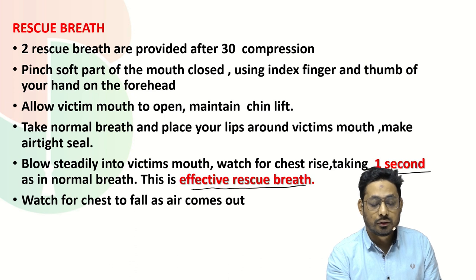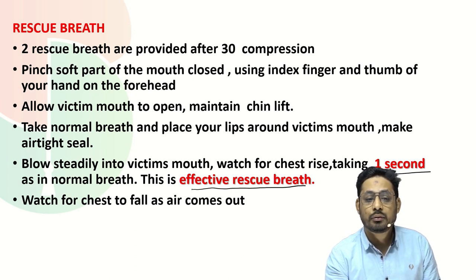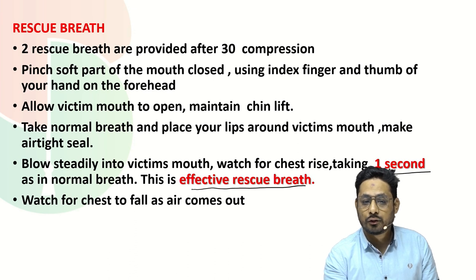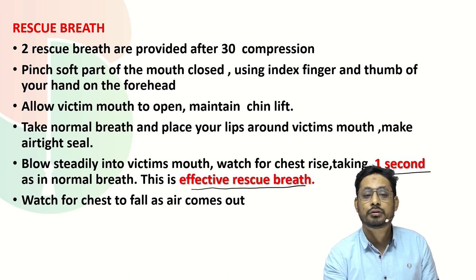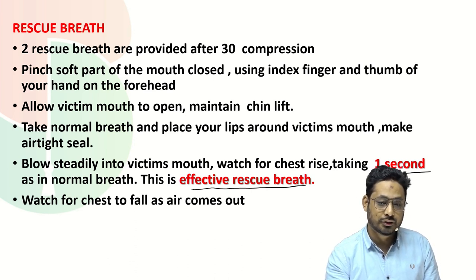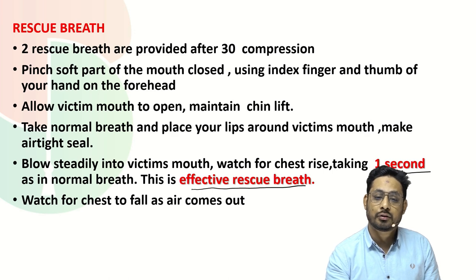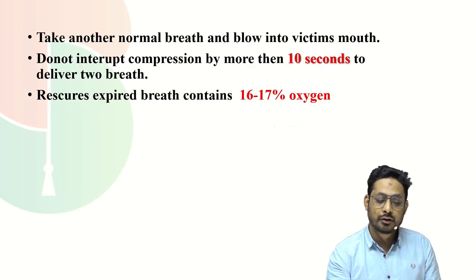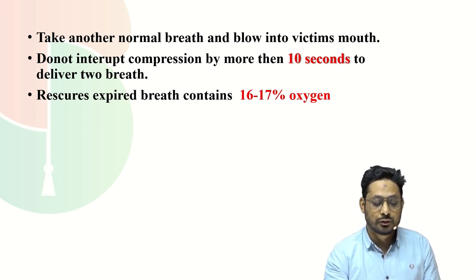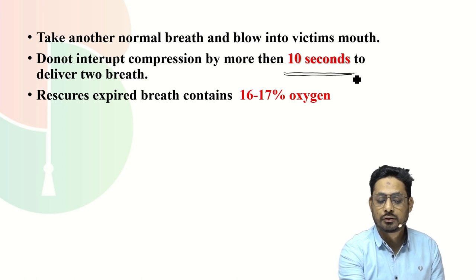The components of effective rescue breath are: two rescue breaths after 30 compressions. Before giving the breath, pinch the soft part of the nose, allow the victim's mouth to open, place your lips around the victim's mouth making an airtight seal, and blow slowly while watching for chest rise. The breath is given over one second as a normal breath. After giving the rescue breath, watch for the chest to fall back as the air comes out, then take another normal breath, blow into the victim's mouth, and continue this process.